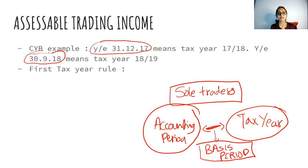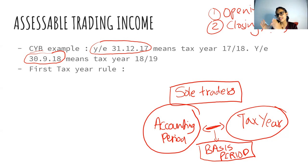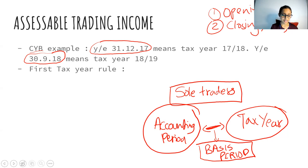This is the rule we use for all cases, except for two cases: opening years and closing years of business. In these two cases, we don't apply CYB. For opening years, we learn the first three tax years' rules, and for the closing year, the last year rule — these are both studied in this chapter.